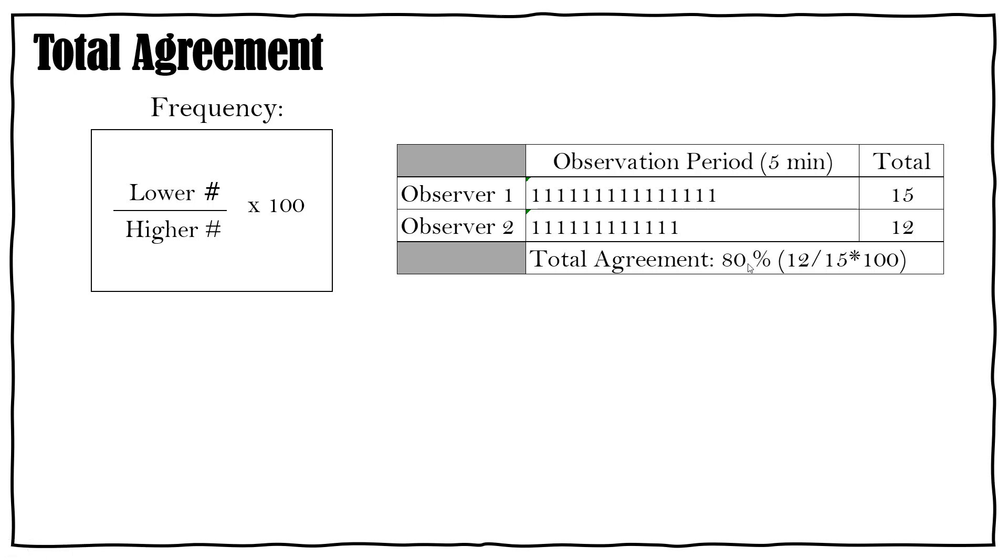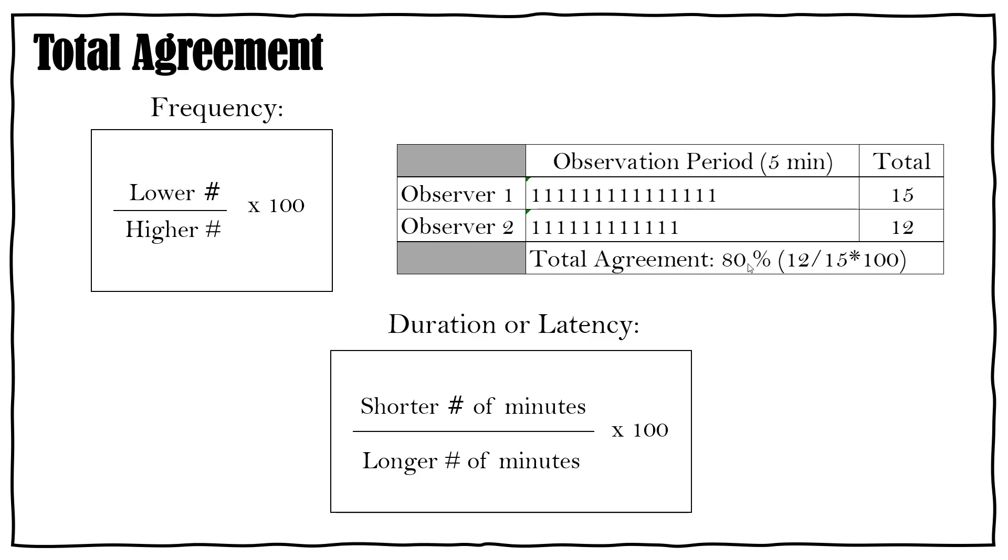Remember 80% or higher is fine. You can also do this with duration or latency. Like I mentioned, these are time measures. So you're going to have your two observers and you're going to get a total number of minutes that the behavior occurred, and you're going to put the shorter number of minutes over the longer number of minutes, multiply by 100 and get your score.